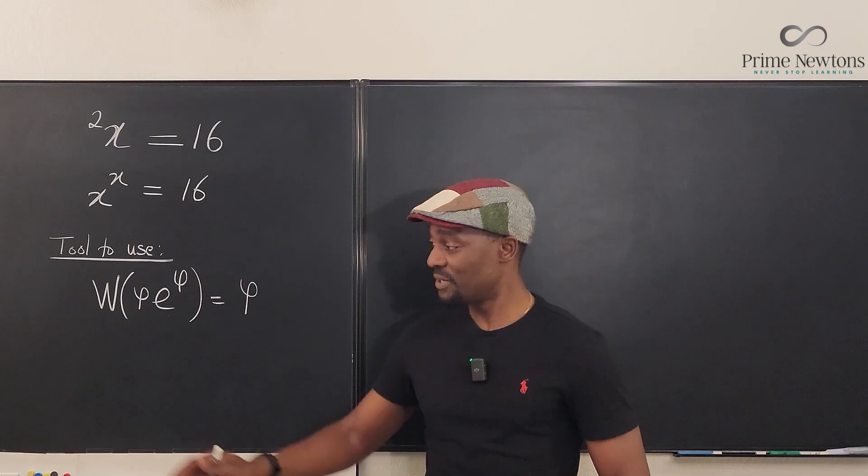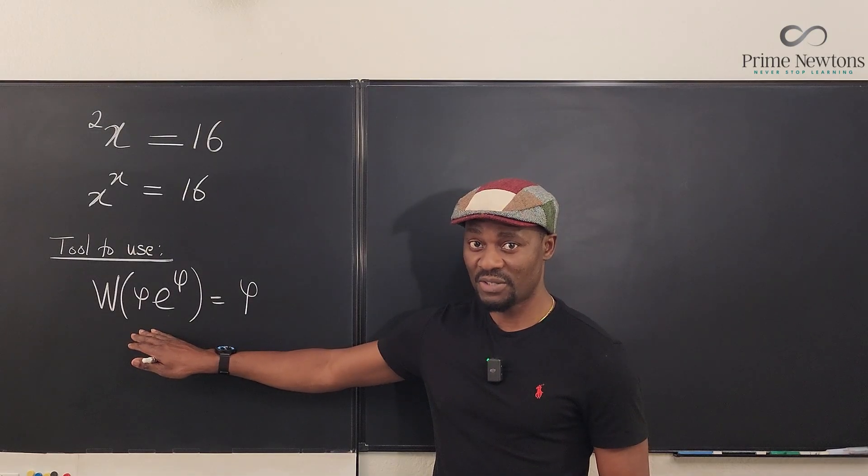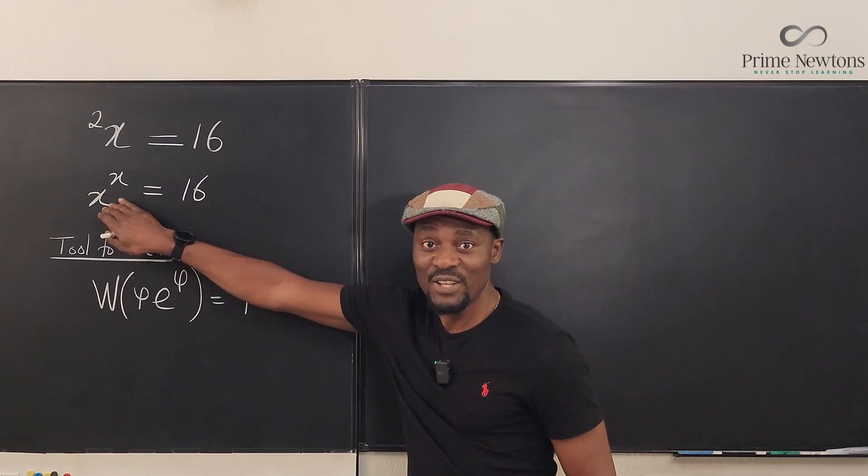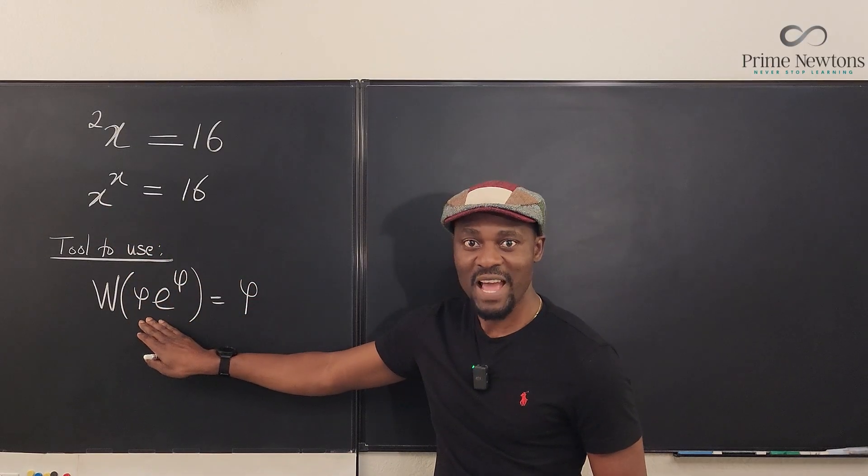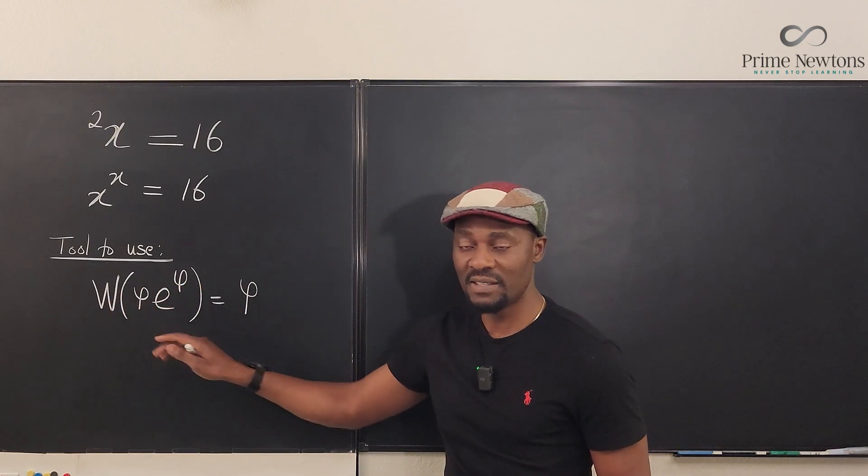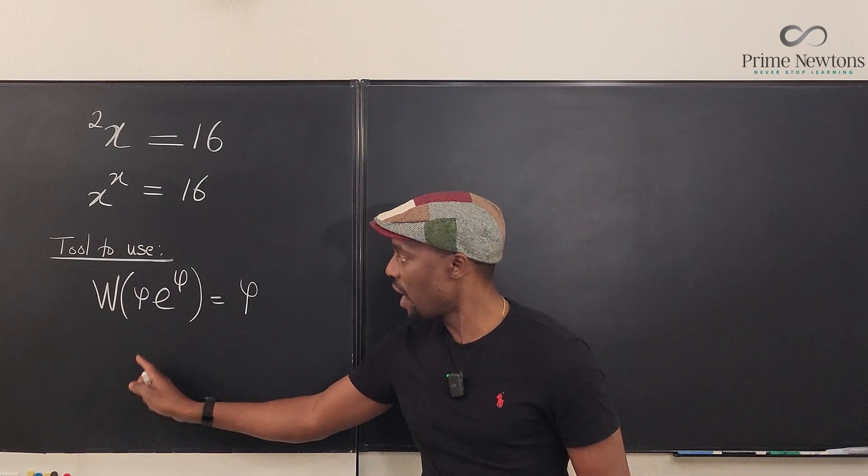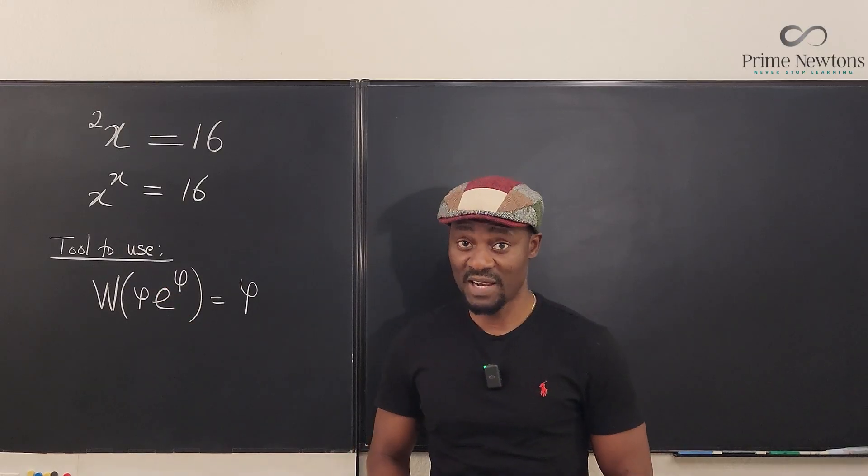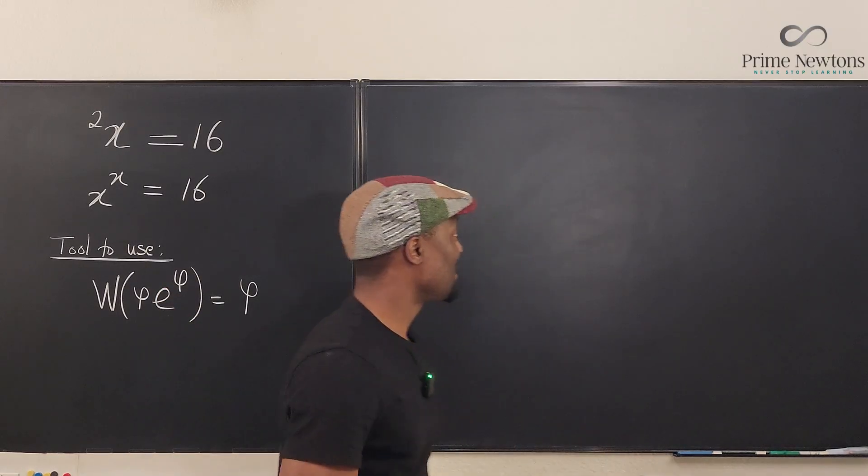The tool we're going to use is the W function. So remember, our mission is to rewrite this to look like this, and once it looks like this, we can take the W of both sides, and then we're going to get our whatever is here, and maybe it will help us find our final answer.